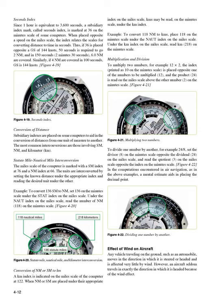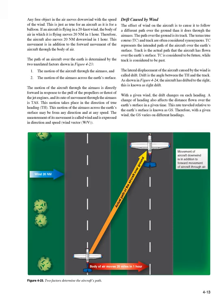Effect of wind on aircraft: any vehicle traveling on the ground, such as an automobile, moves in the direction in which it is steered and is affected very little by wind. However, an aircraft seldom travels in exactly the direction in which it is headed because of wind effect. Any free object in the air moves downwind with the speed of the wind. If an aircraft is flying in a 20-knot wind, the aircraft also moves 20 nautical miles downwind in one hour, in addition to its forward movement through the air.